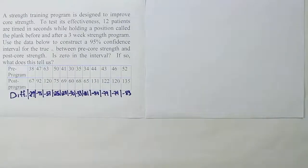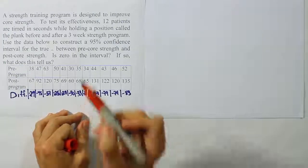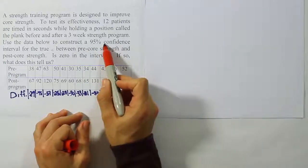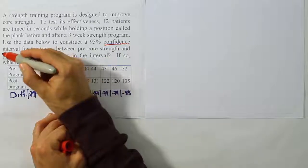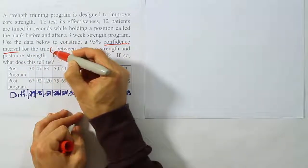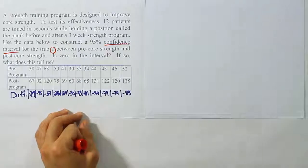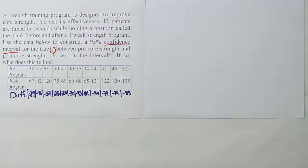Okay, so what we want to do here is first identify what technique we're supposed to use to solve the problem. It clearly says construct a 95% confidence interval, and it tells us for the true mean difference.